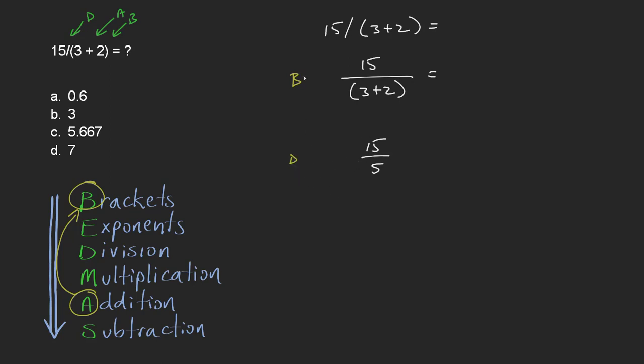Actually that was brackets and addition, and so the only job that remains is division because there are no exponents. So division comes next and 15 divided by 5 is 3. And so the answer here is B.